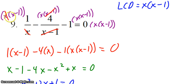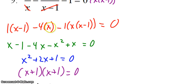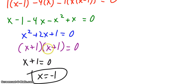I multiplied each term by x times x minus one. In the first term the x's cancel, leaving one times x minus one. In the second term the x minus one's cancel, leaving negative four times x. The third term gives negative one times x times x minus one. On the other side, zero times anything is still zero. So I distribute, combine like terms, and end up with x squared plus two x plus one equals zero. This conveniently factors into x plus one times x plus one equals zero. Set the factors equal to zero and solve for x.